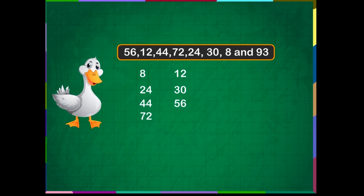72 comes next. And finally, 93 is the largest number in the given numbers. Let us now arrange them in increasing order.